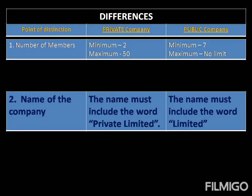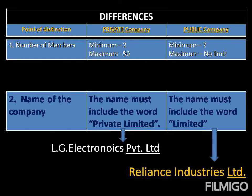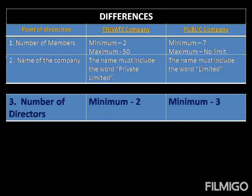The second point of difference is on the basis of the name given to the company. A private company will have 'Private Limited' attached to its name and a public company will have 'Limited' written with its name. For example, LG Electronics Private Limited for a private company and Reliance Industries Limited for a public company.